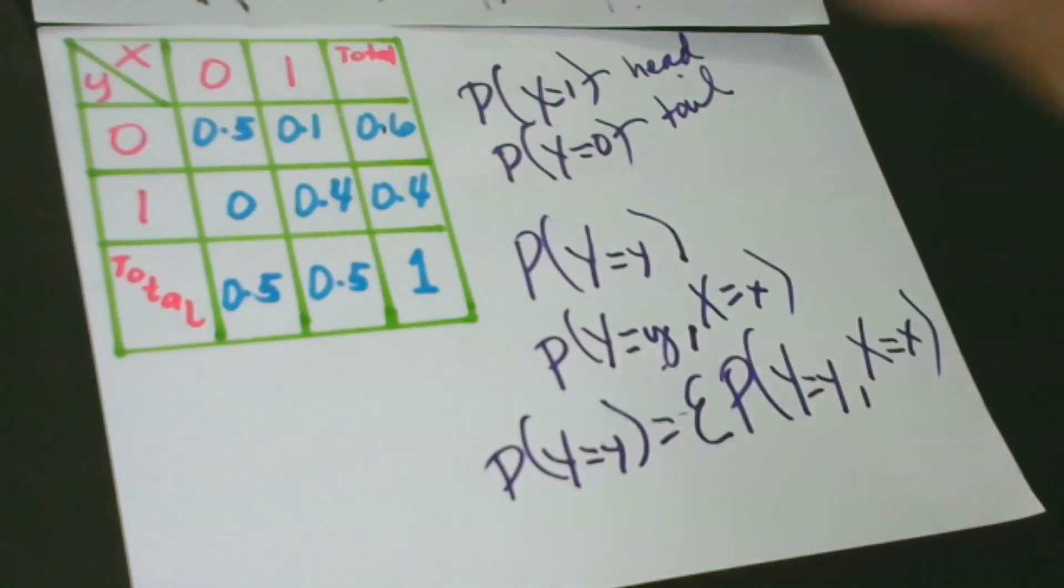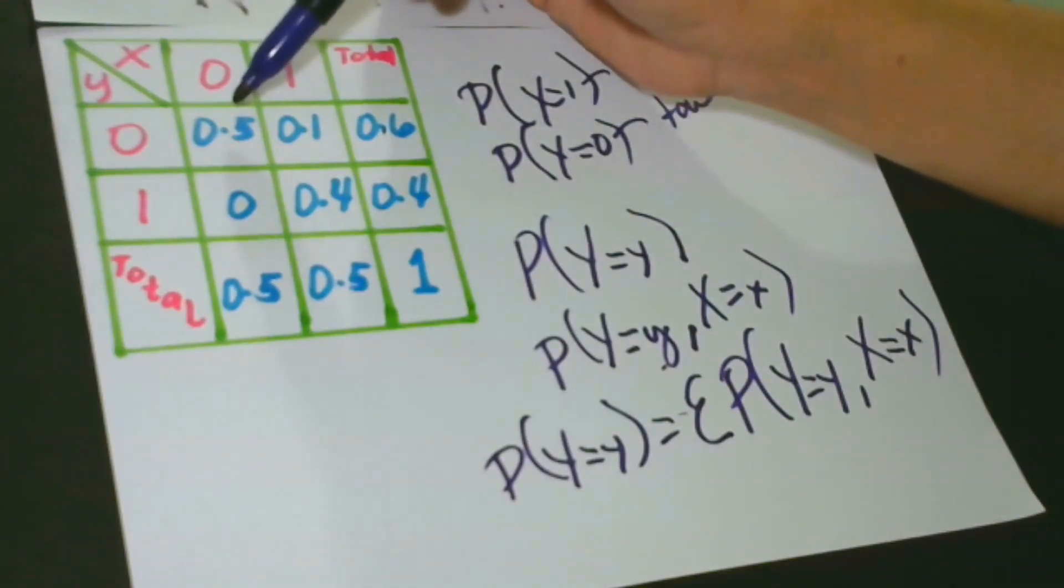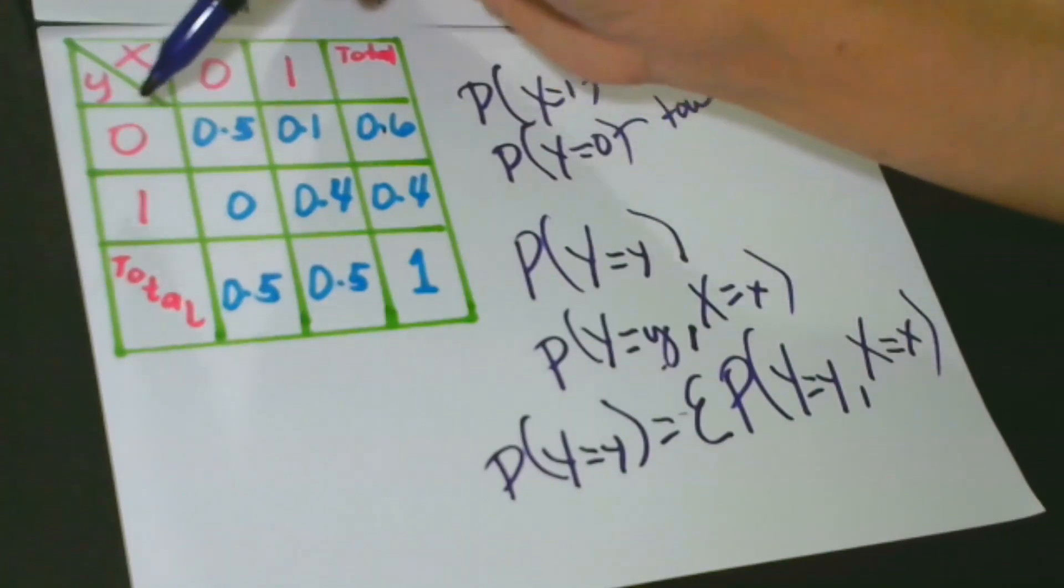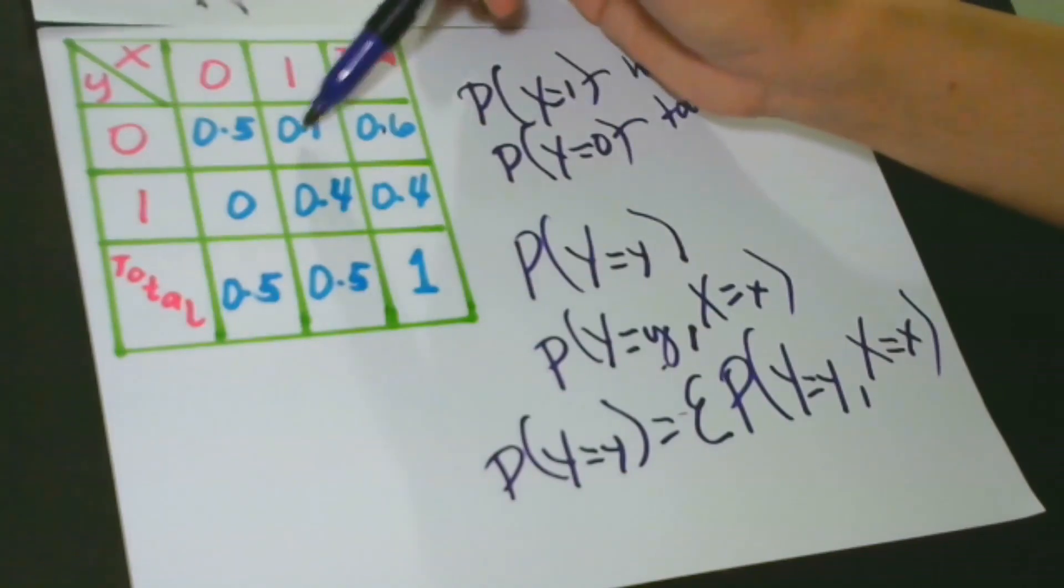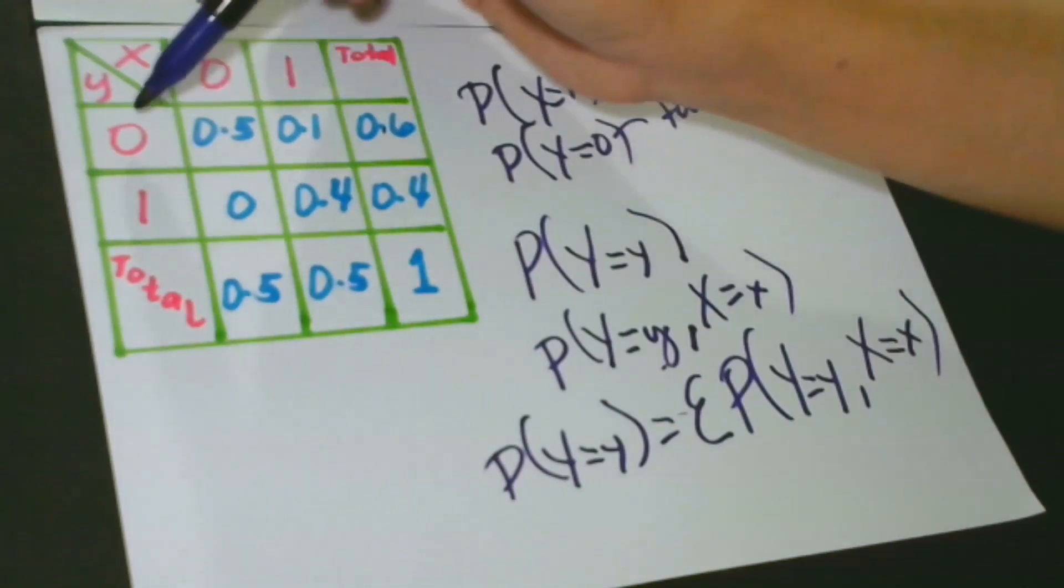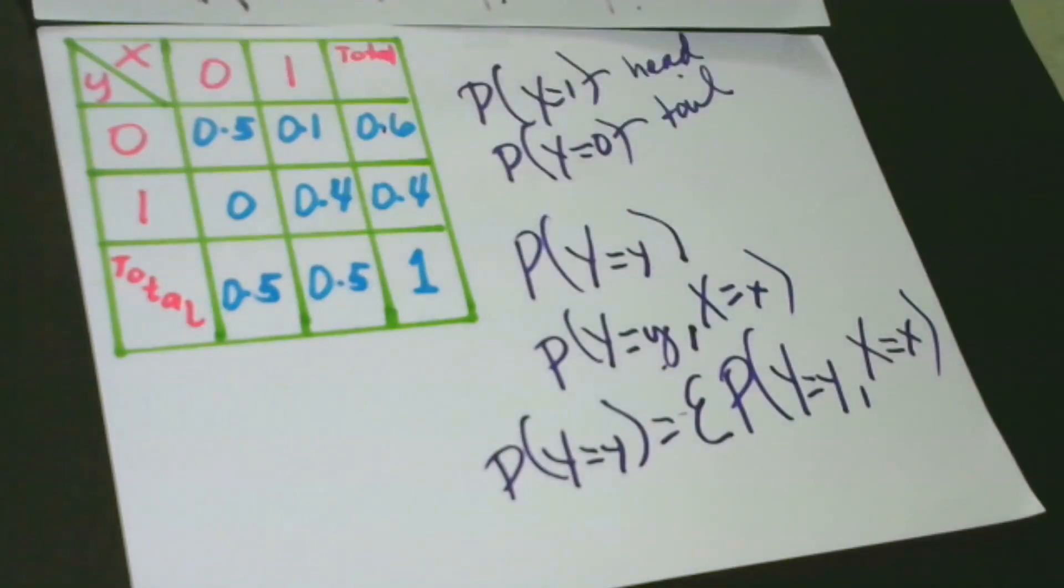Again, 0.5 here if the result of X is 0 and I said that it is 0, and it is 0.1 if the result of X is 1 and I said tail.